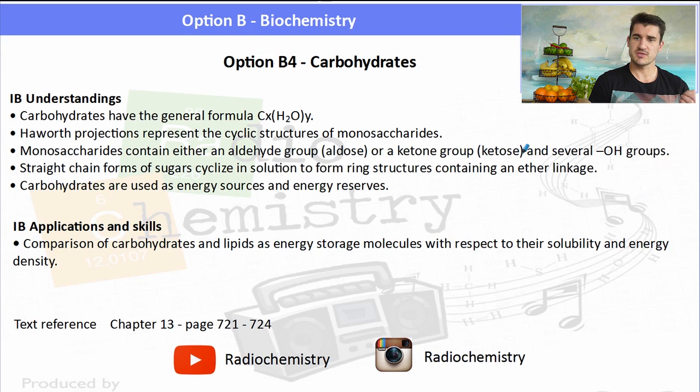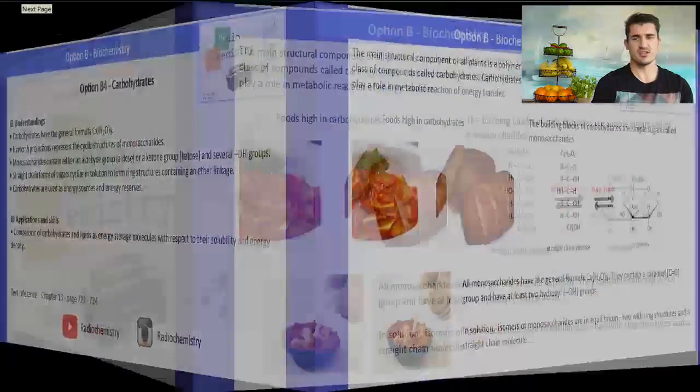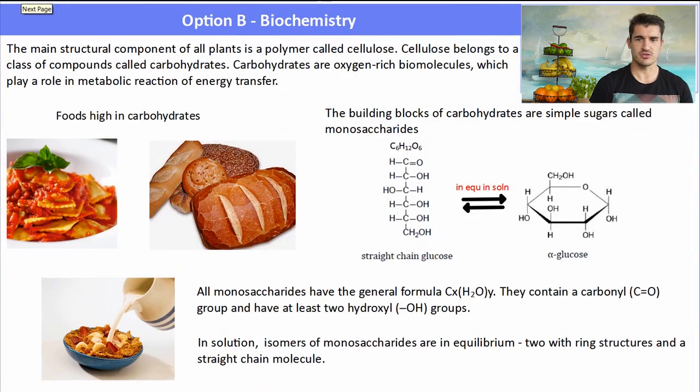So carbohydrates have a very specific general formula. They have Haworth projections which represent the cyclic forms of a carbohydrate. And then we need to talk about them as an energy source and energy reserves.